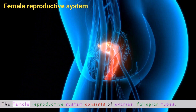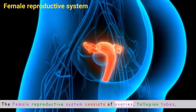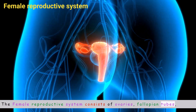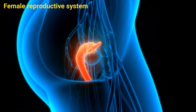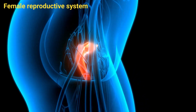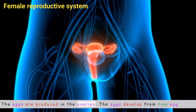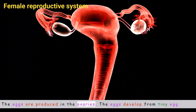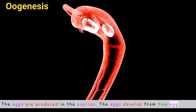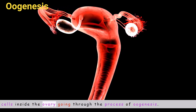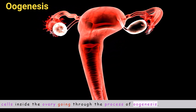The female reproductive system consists of ovaries, fallopian tubes, cervix, and vagina. The eggs are produced in the ovaries, and they develop from tiny egg cells inside the ovary through the process of oogenesis.